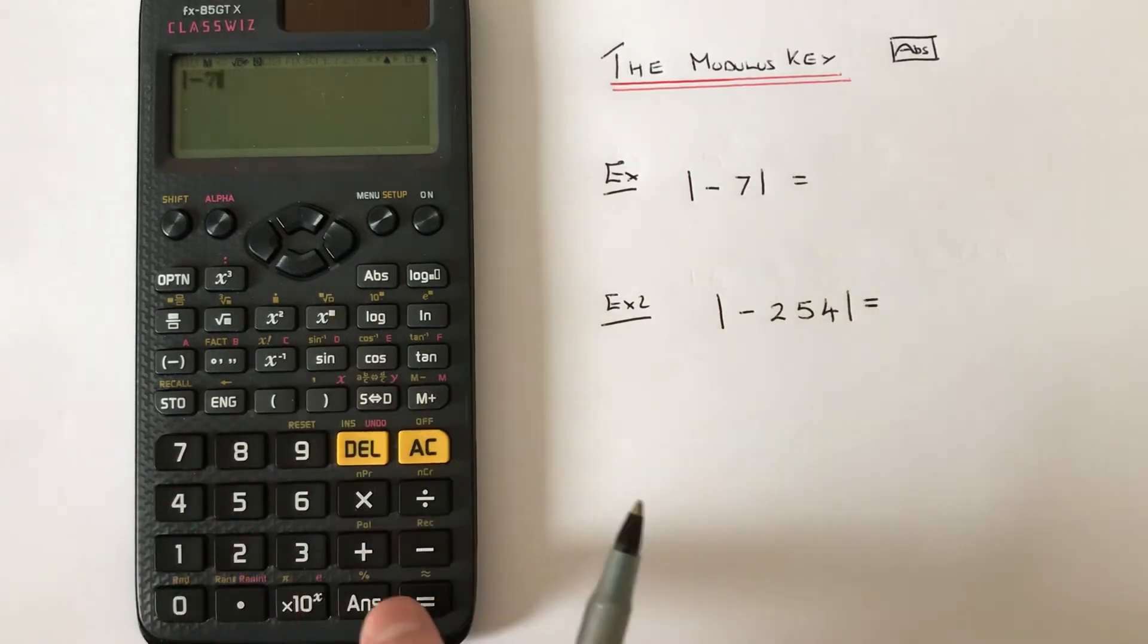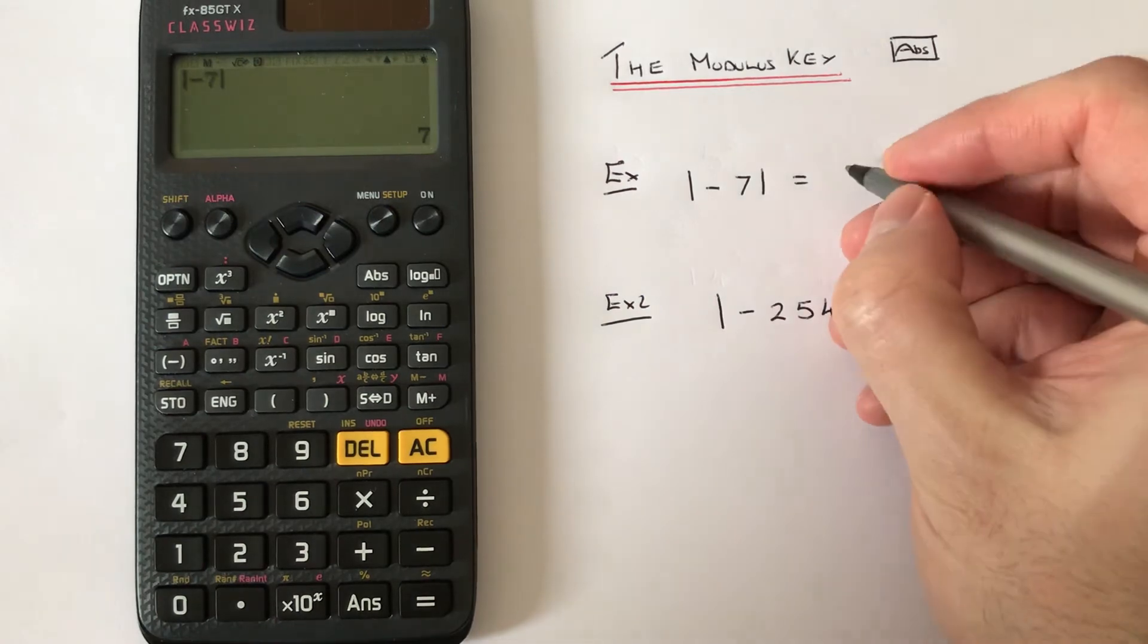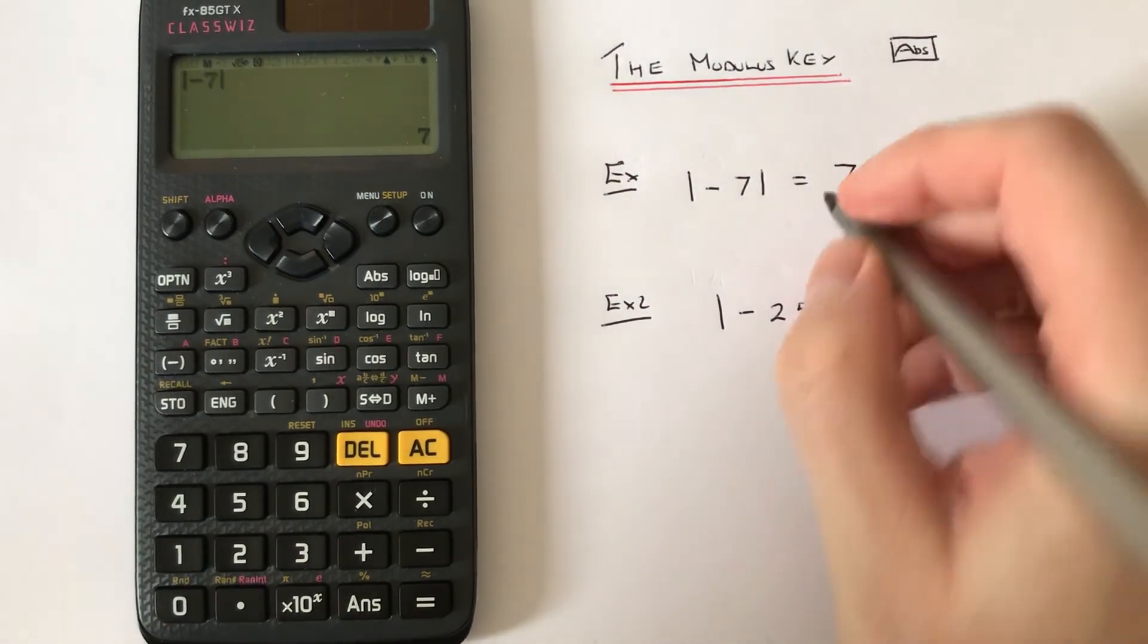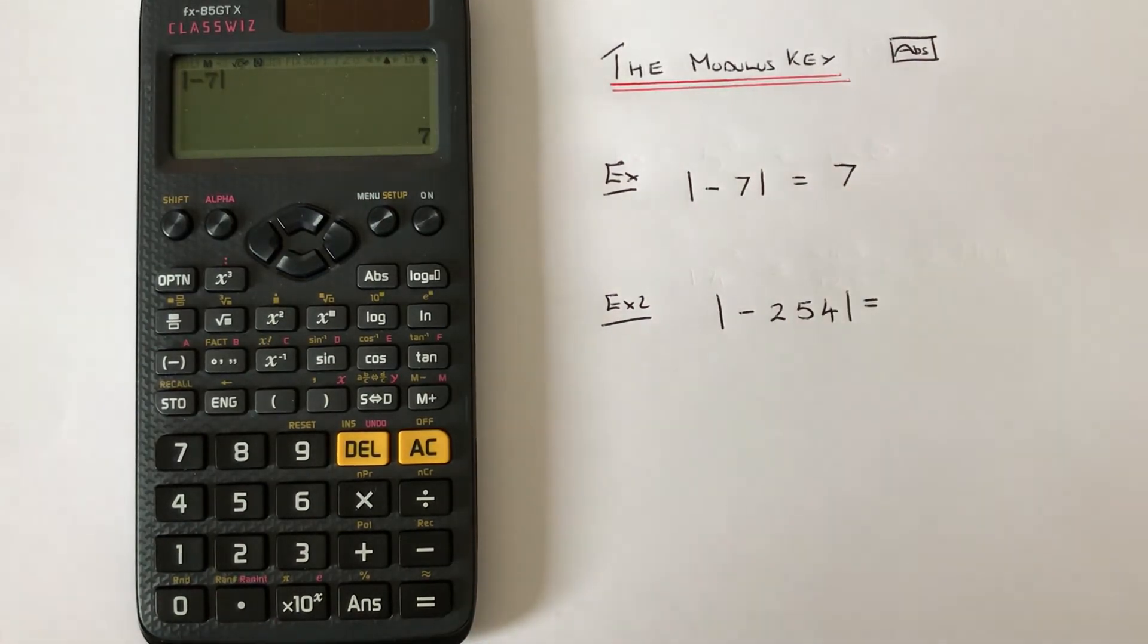Press equals and we get the answer 7. So let's press AC. This time we've got to do the modulus of minus 254.